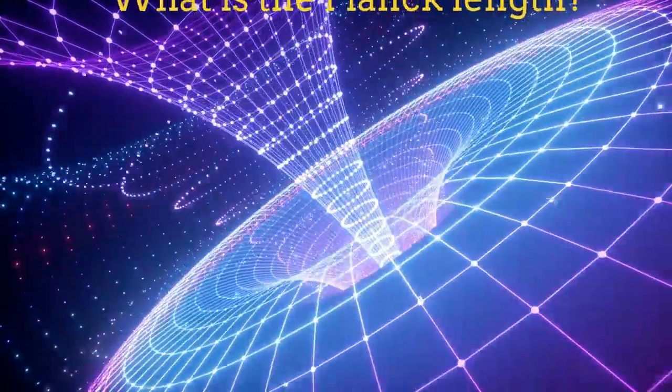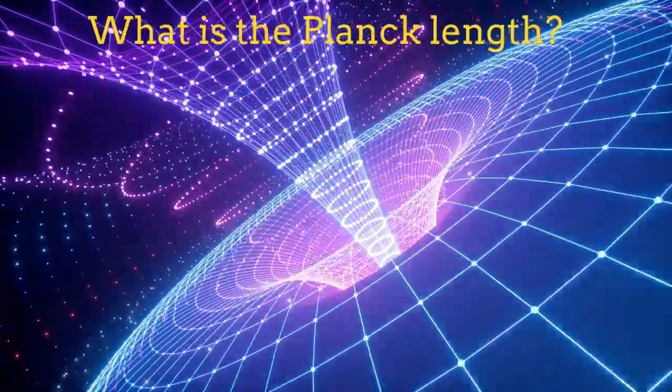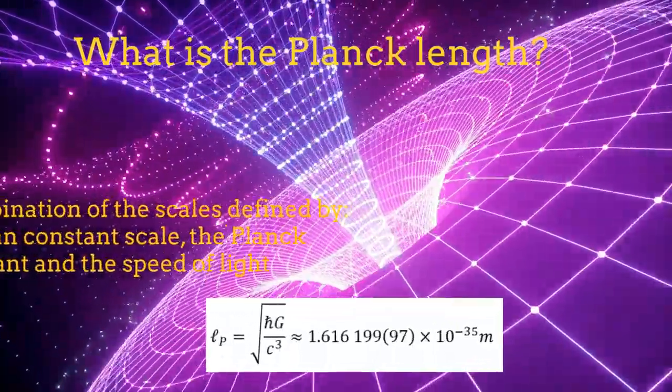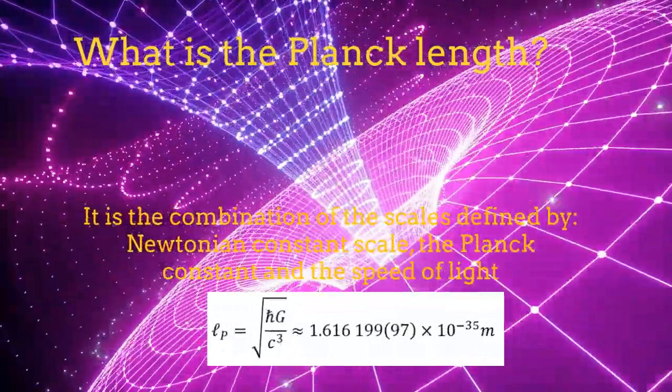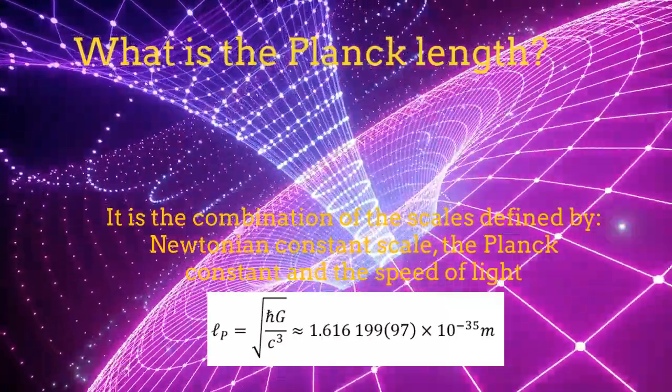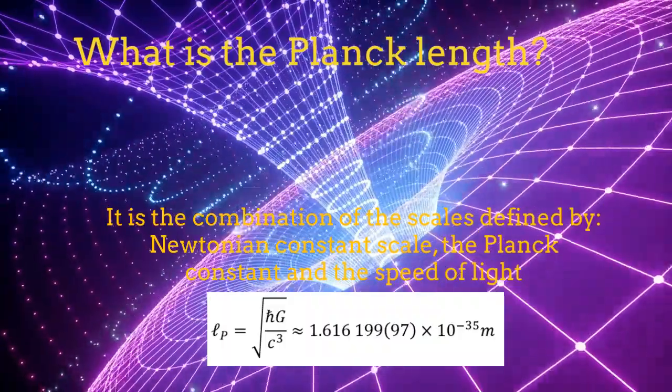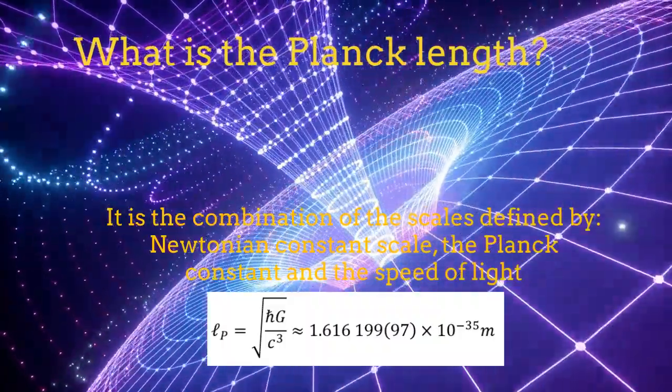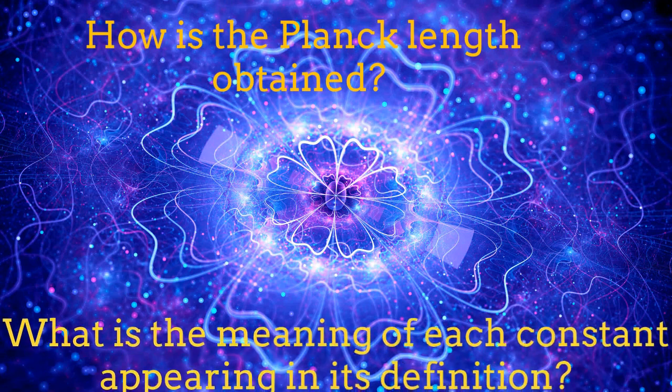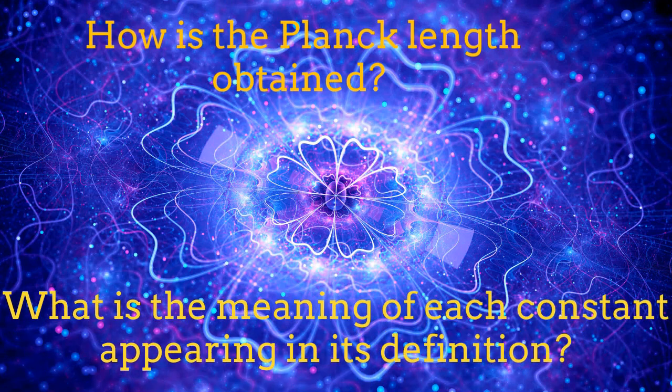First of all, we have to understand what is the Planck length. It is simply a length scale which results from the combination of three different constants: the Newtonian constant of gravity, the Planck constant, and the speed of light. But then it comes out the question, how do we obtain the Planck length? And what is the meaning of each constant appearing inside its definition?